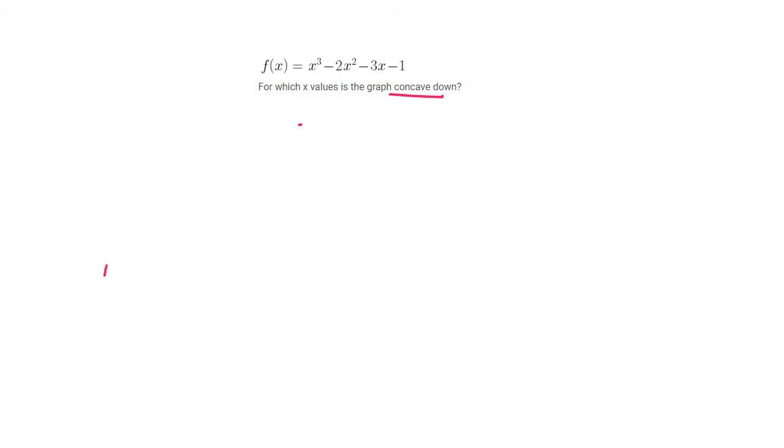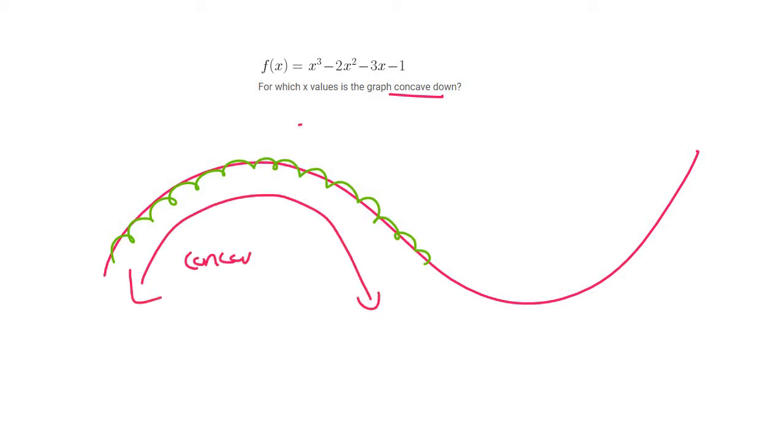So let me summarize that for you. If you have a graph, we know that, or we should know that, areas that look like this, where it's sort of pointing down like that, we call that concave down.